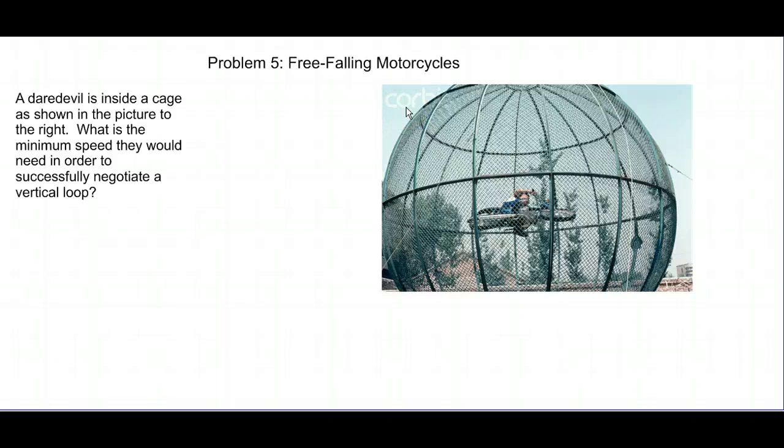Here is the second half of our set of problems. We've got a daredevil inside a cage as shown in the picture. This daredevil is going to be riding a motorcycle, and if they can get it going fast enough, they will be able to successfully negotiate a vertical loop. Now, you are not given any numbers for radius here or mass in this problem, so we will put everything in terms of the radius r. We're going to assume that this cage is of radius r, and we are going to be able to solve this problem using only that. We will not need the mass, as you found out last problem, which is really nice.